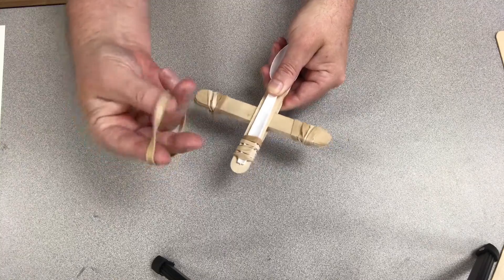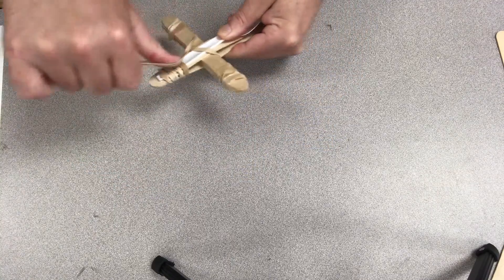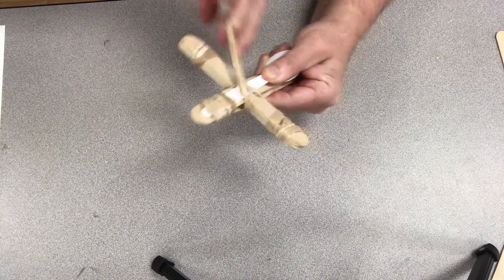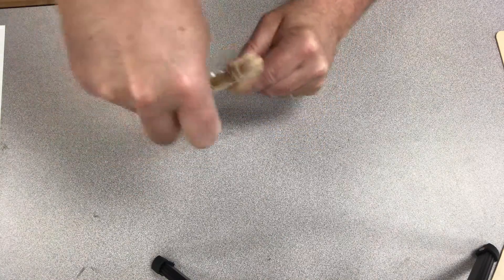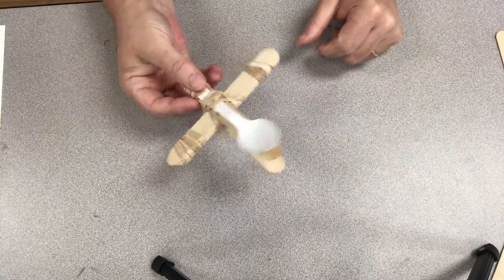Once you get to a good spot there toward the middle, you'll take another rubber band and wrap it around everything right in the middle there. Make it as tight as you can get it until it's nice and tight. There!